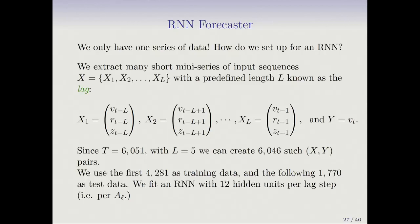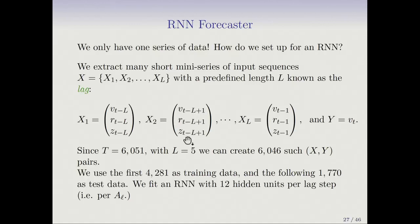We extract many short mini-series of input sequences of the form X1, X2, up to XL — where L is five. Each element contains three variables: V for log trading volume, R for the Dow Jones return, and Z for the volatility. So the sequence starts at (Vt−L, Rt−L, Zt−L) as the first element, then (Vt−(L−1), Rt−(L−1), Zt−(L−1)), and so on up to lag one back. That's how we make the sequence.